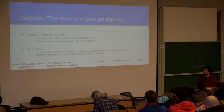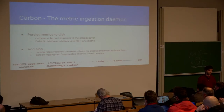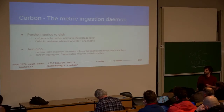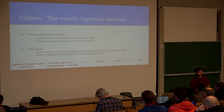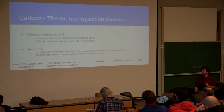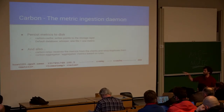Graphite is divided into two components. The first one is Carbon. That's the application you send metrics to. All your applications or servers periodically — like every minute — send metrics to Carbon, which will then persist them to disk. The default database for Carbon is called Whisper. With Whisper, each metric — for example, server1.2.3.cpu.0.user — has its own file on disk.